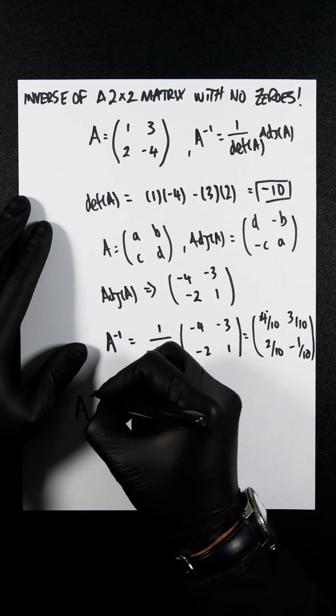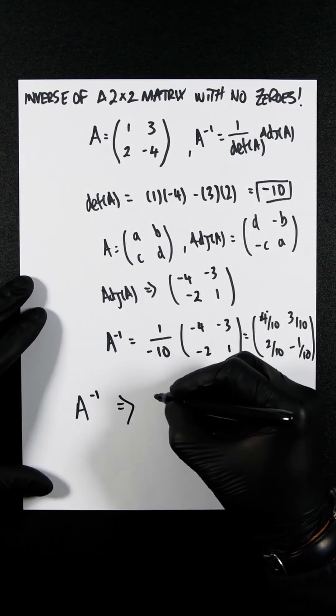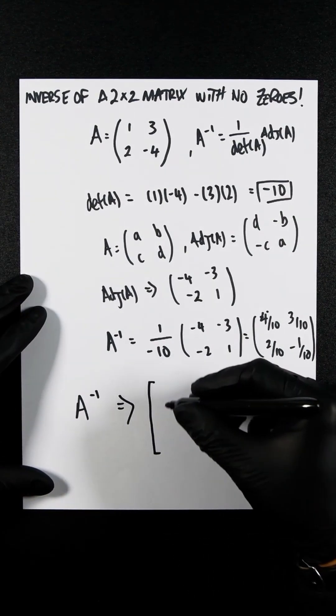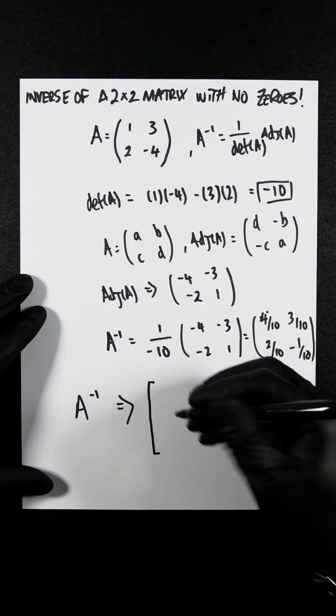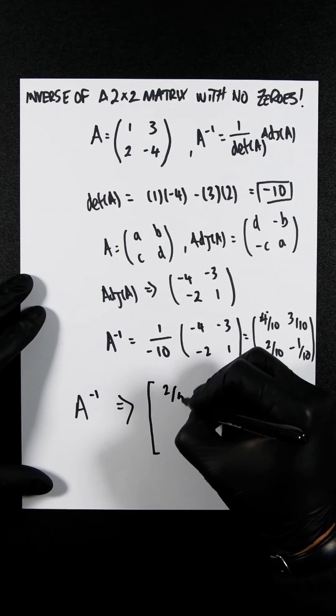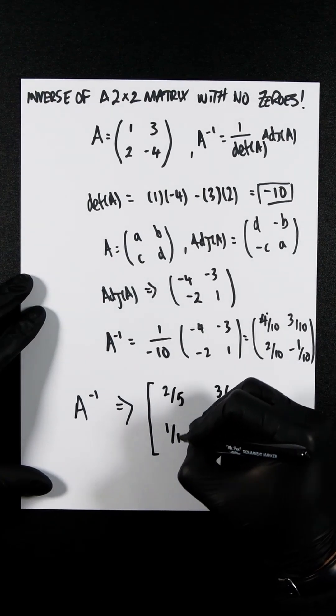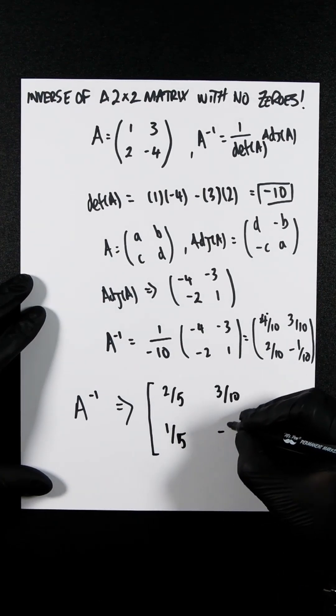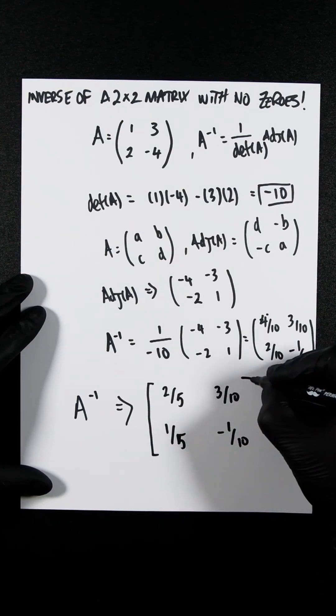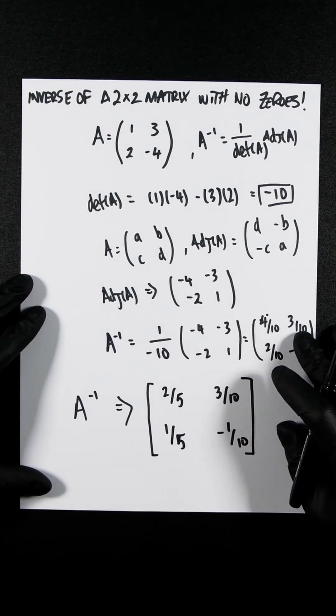Obviously, loads of things here can be simplified. So therefore, we're going to switch up the brackets, just for a little bit of a goof and a gaffe. You're going to get 2 over 5, 3 over 10, 1 over 5, and minus 1 over 10. That's it. We've done the inverse.